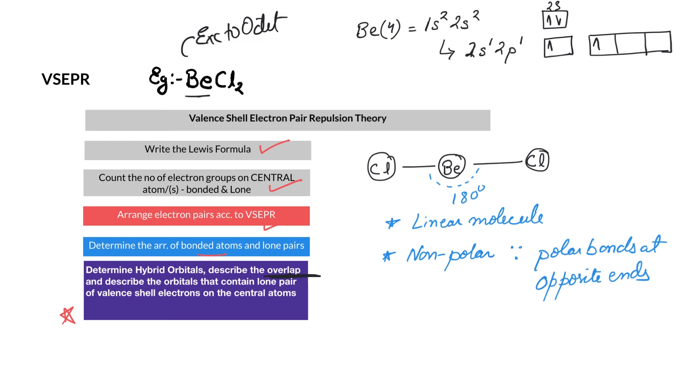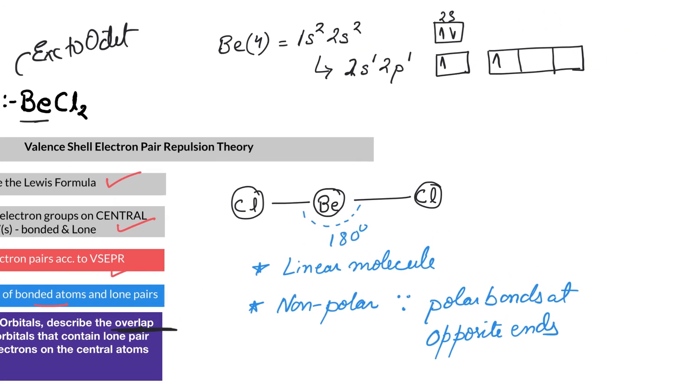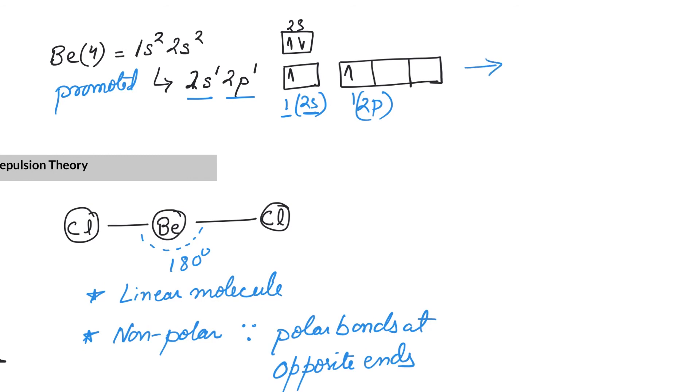Now Be: we have 1s² 2s². The s is filled; it cannot participate unless it promotes itself. So this is the promoted energy level: 2s¹ 2p¹. We have two orbitals involved: one 2s orbital and one 2p orbital.